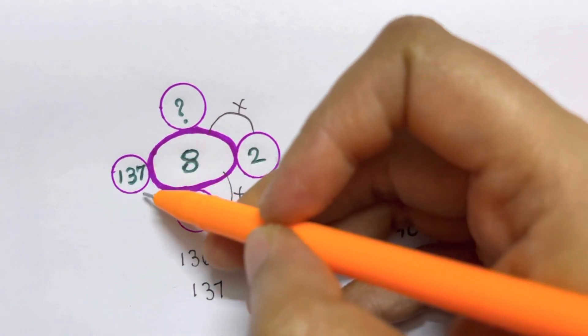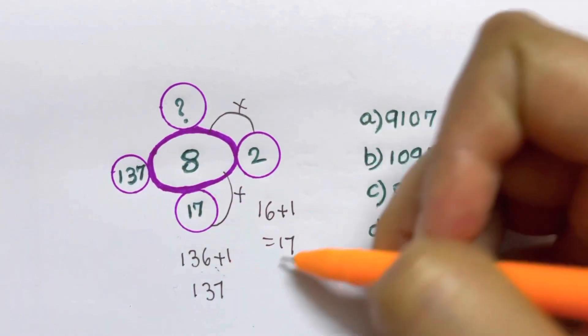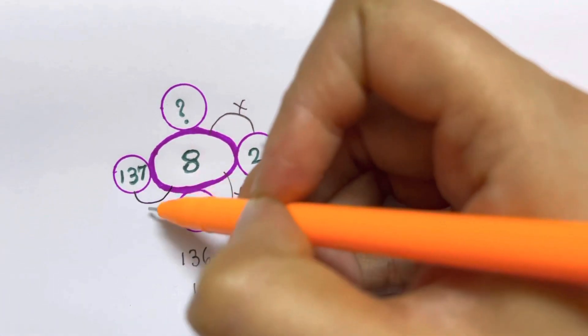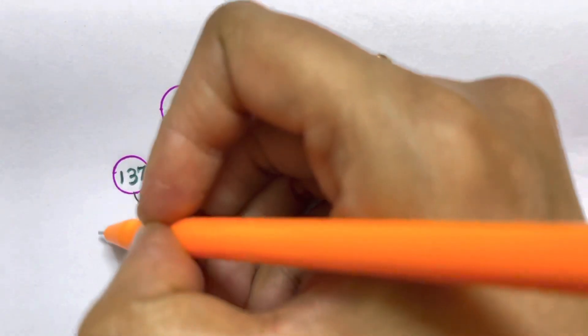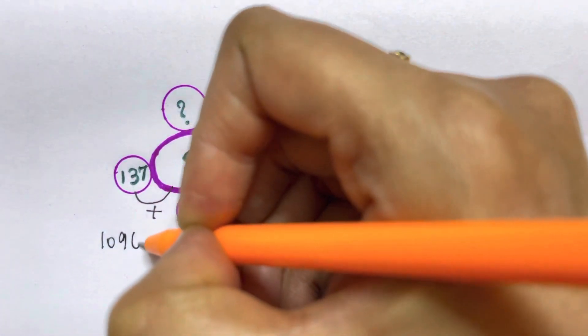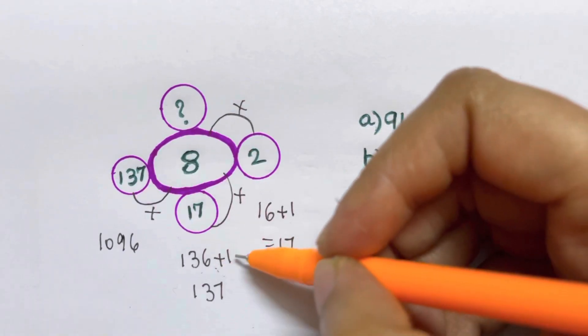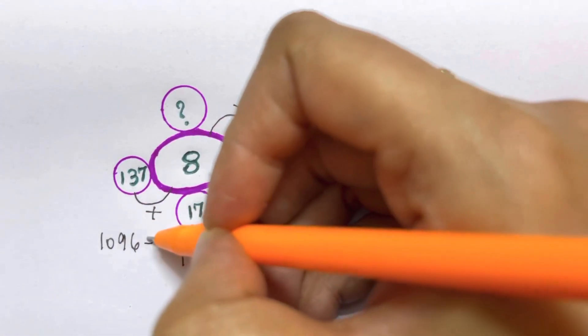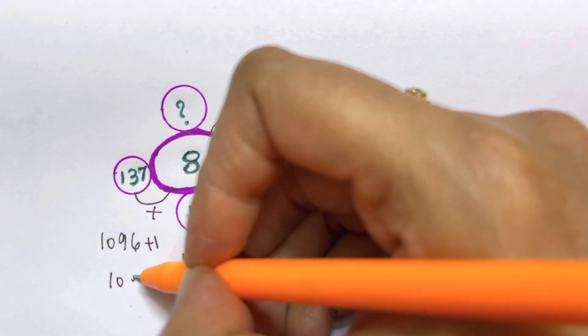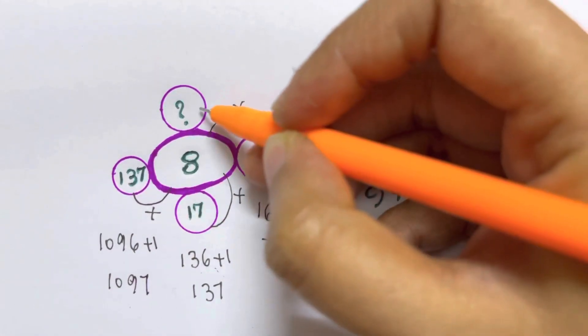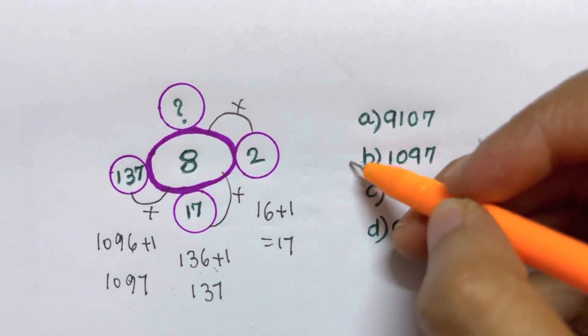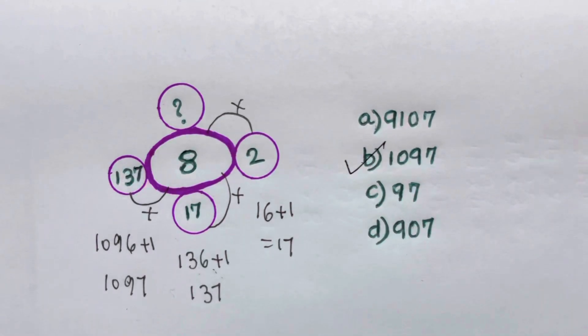The same logic I'm going to apply here. 137 multiplied by 8 will give me 1096, and as I've added plus 1, I get 1097. So my missing number is 1097, that's option B.